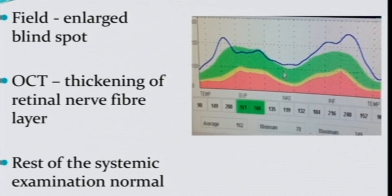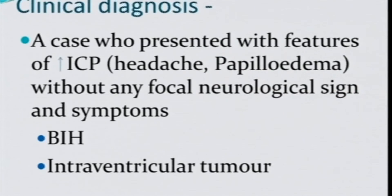A patient presenting with features of increased intracranial pressure with no neurological localizing signs or symptoms makes us think of benign intracranial hypertension, also called idiopathic intracranial hypertension or pseudotumor cerebri. To fulfill the modified Dandy criteria, we should get imaging done to rule out any space-occupying lesion, as a tumor inside the ventricles of the cranial cavity can also mimic this presentation.